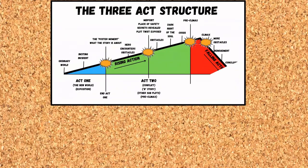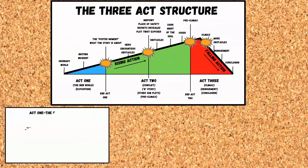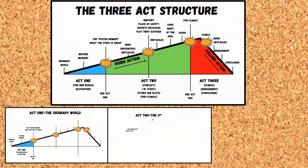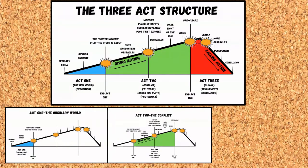In the first act, we see the normal world of the hero and offer exposition that establishes the world and the story. The first act ends with an inciting incident that draws the hero into the main action of the story. In the second act, we have the rising action, which leads to the midpoint and crisis. The second act usually ends with a turning point where it looks like the hero and his allies will fail.